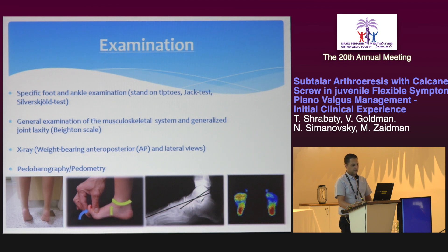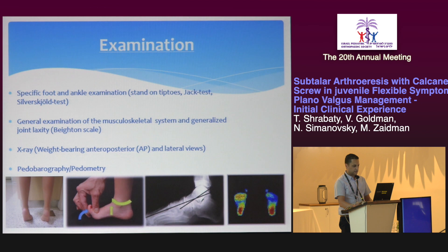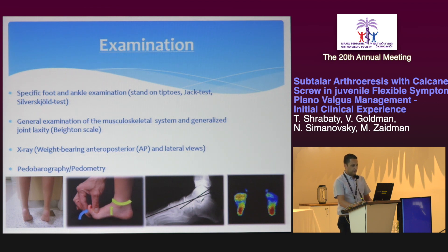The physical examination begins with inspection of the shape of the feet and the gait pattern, followed by specific foot and ankle examinations to check the flexibility or rigidity of the feet. A general examination of the musculoskeletal system is performed to exclude joint laxities, then X-ray examination in standing views and oblique views to exclude tarsal coalition. Pedobarographic or podometric examinations are also important for further evaluation and follow-up.